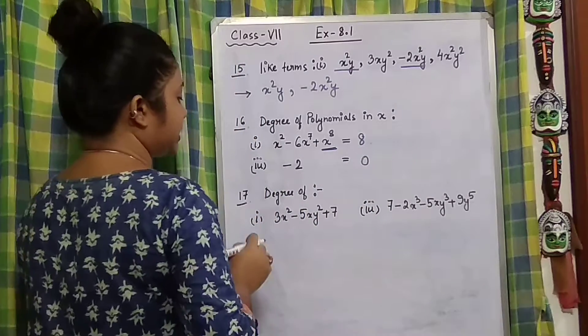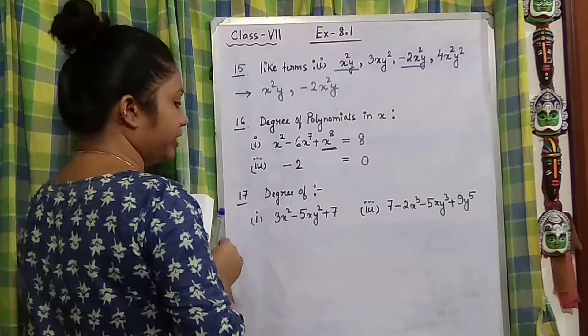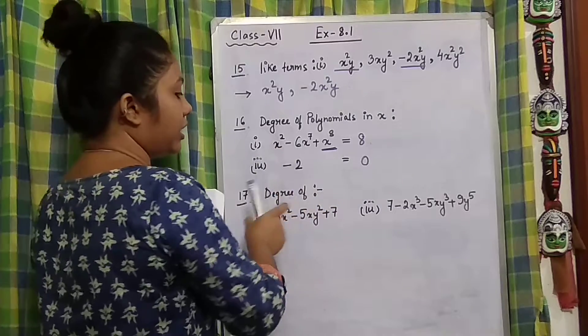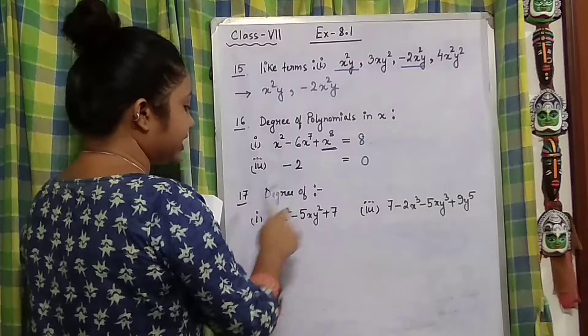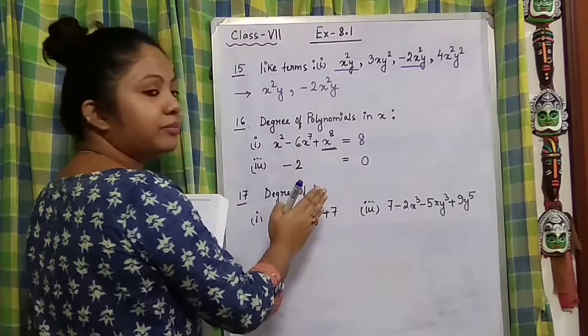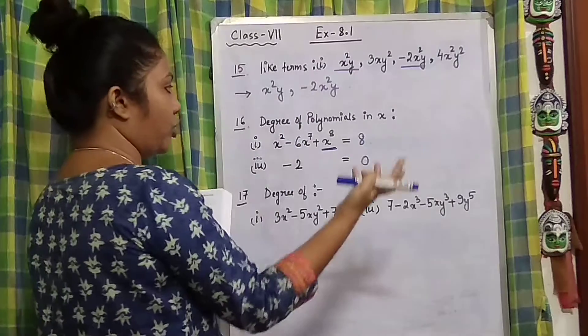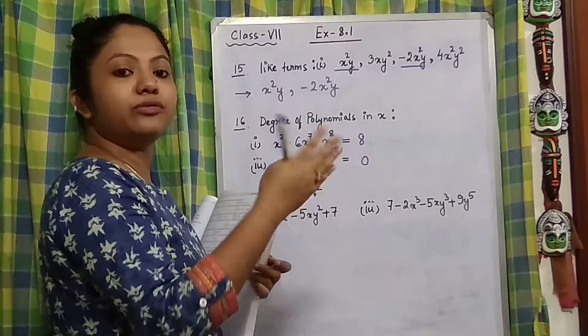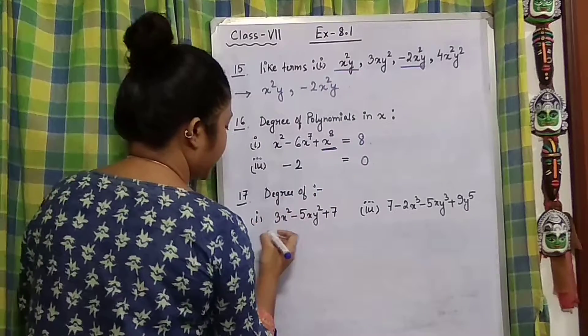Now come to sum number 17, where again we have to find the degree of the polynomial. You can see that the variables are not alike here. This is the type of polynomial where there will be more than one type of variable. So here, see number 1.